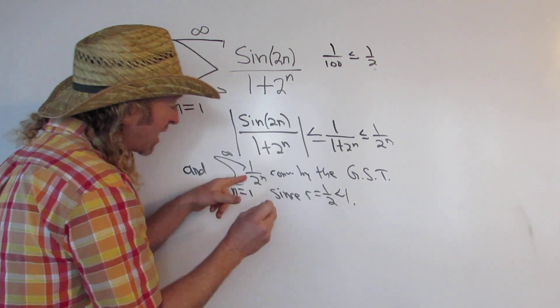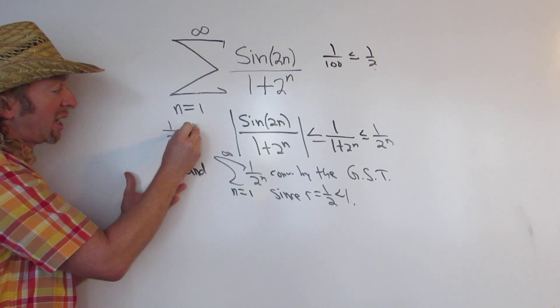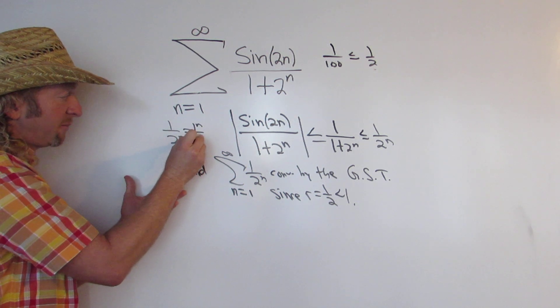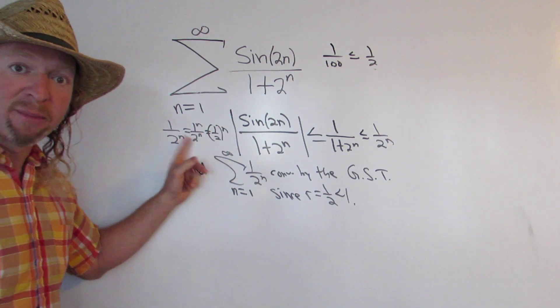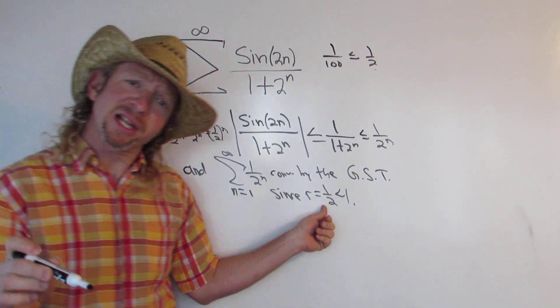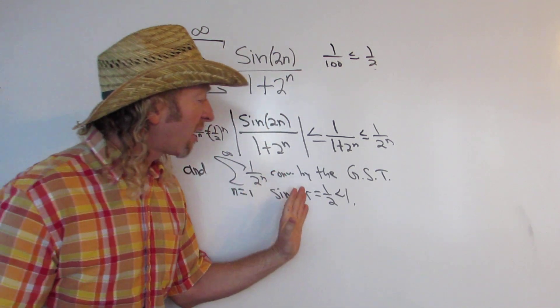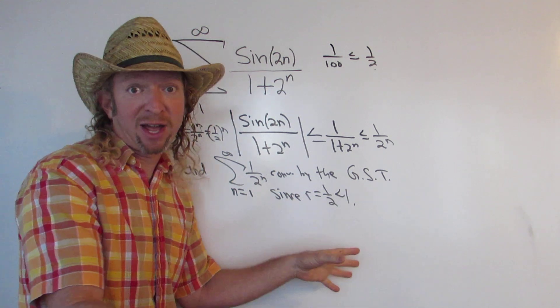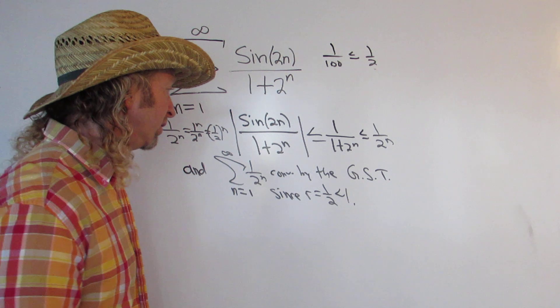By the way, r is 1 half here. If it's not clear, note you can write 1 over 2 to the n as 1 to the n over 2 to the n. And that's 1 over 2 to the n. So r is your common ratio. Remember, if r is less than 1, the series will converge by the geometric series test. If r is 1 or larger, it will diverge. In absolute value, you can have a negative 1 half and it will still converge.